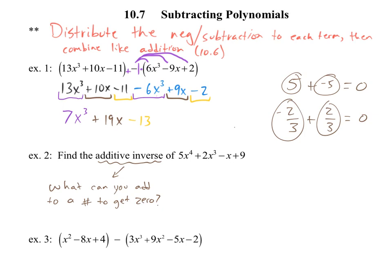So if I have, now going to this problem, 5x⁴, what can I add to 5x⁴ to give me 0? Negative 5x⁴, agreed? So I'd have 5x⁴ plus negative 5x⁴, or just 5 minus 5, I get 0.